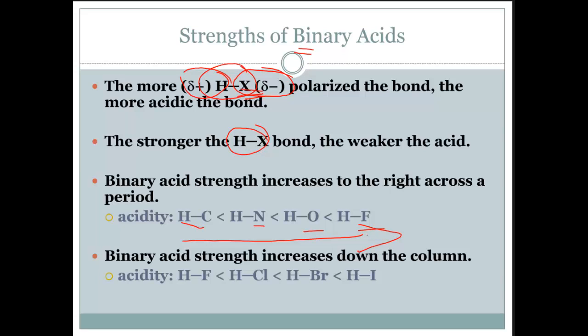Binary acid strength increases down the column. So fluorine, chlorine, bromine, and iodine.